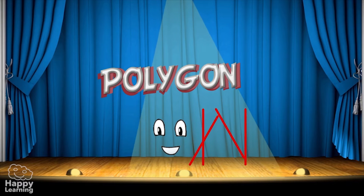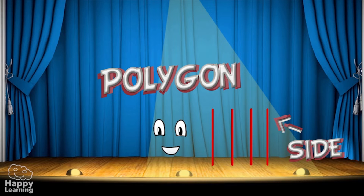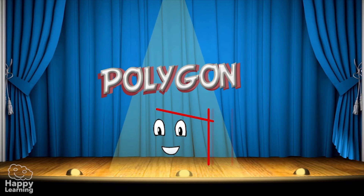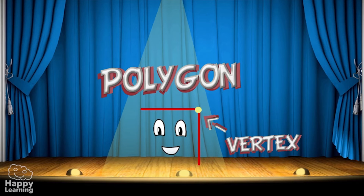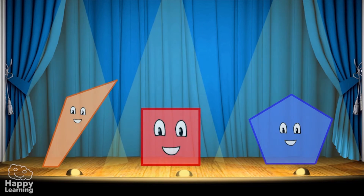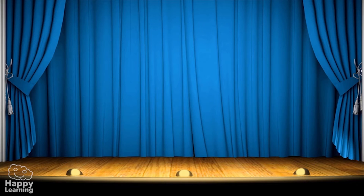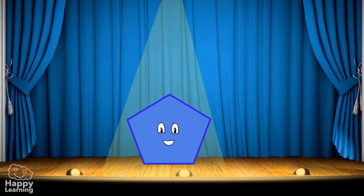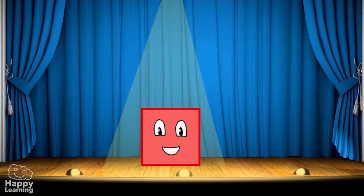A polygon is made of several elements. The side is each one of the segments that form the polygon. The vertex is the point where two sides meet — a corner. And the angle is the space formed between two sides that meet at a point.